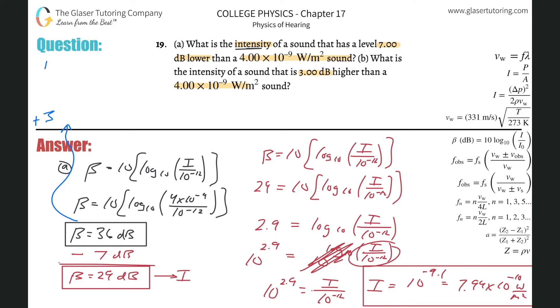So the new decibel value here, when you add three to it, or I should say the new beta value is simply going to be 39, 39 decibels.